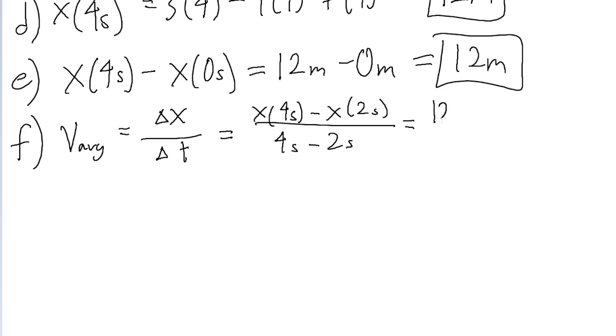As we found in the previous parts, x at 4 seconds is 12 meters minus x at 2 seconds, which is negative 2 meters. Then we divide this by the time interval, 4 minus 2, that's 2 seconds. And 12 minus negative 2 is positive 14. So we have 14 meters divided by 2 seconds, which gives us an average velocity of 7 meters per second.